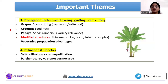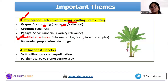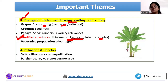Propagation techniques are a really important topic. There are different methods: layering, grafting, stem cuttings — hardwood cuttings and softwood cuttings. There are also different modified vegetative structures like rhizomes, suckers, corms, and tubers. For example, suckers are used in banana. You need to know which propagation structure is used for which crop — for instance, what is used for coconut versus grapes.